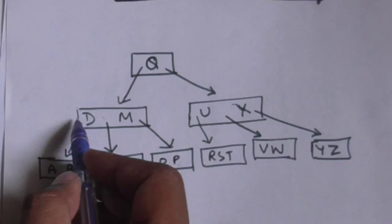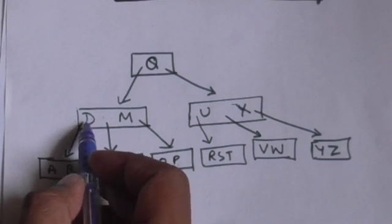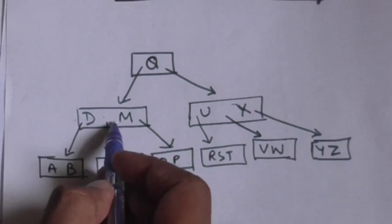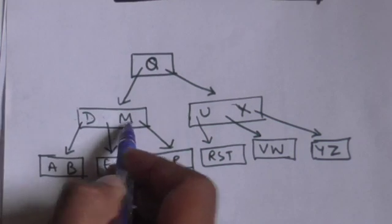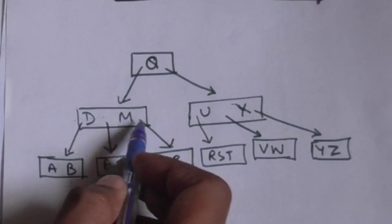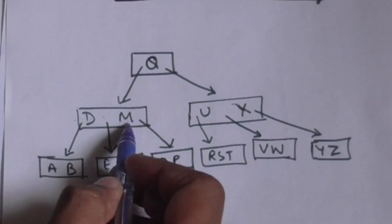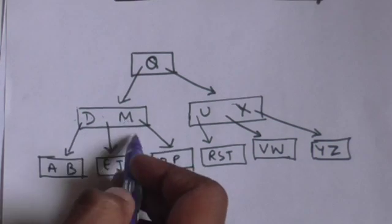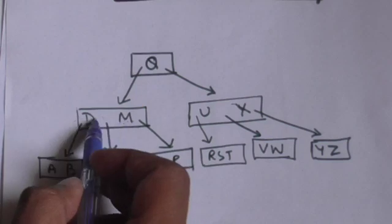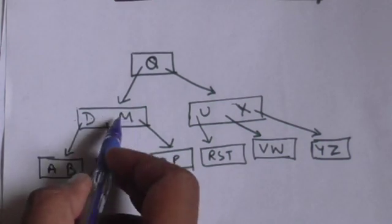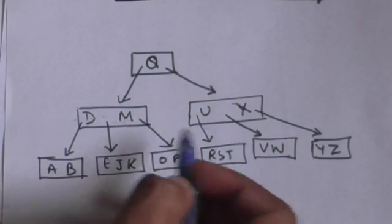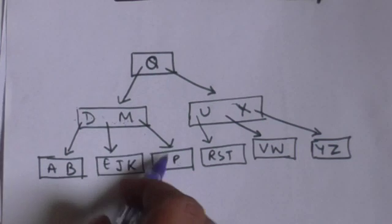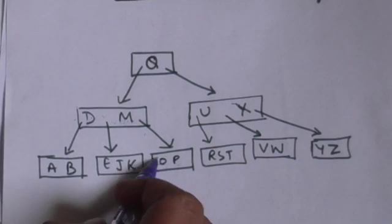We will compare key P with the first key of this node. The first key is D. D is smaller than P, so we move to the next key of this node, which is M. P is also greater than M, and there is no key to the right of M in this node, so we will move to the child node at the right of key M.